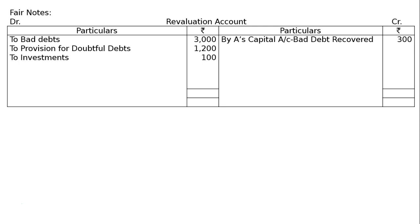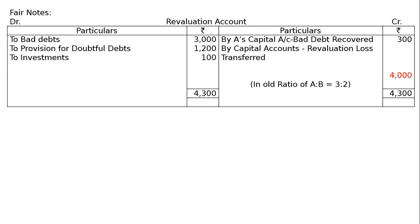Now total the revaluation account. Debit side total: ₹4,300. Credit side: ₹300. After subtracting, the balance is ₹4,000 loss. Write on the credit side: by capital accounts — revaluation loss transferred in old ratio of A to B i.e., 3 to 2. So A gets 3/5 of ₹4,000 = ₹2,400 and B gets 2/5 of ₹4,000 = ₹1,600.